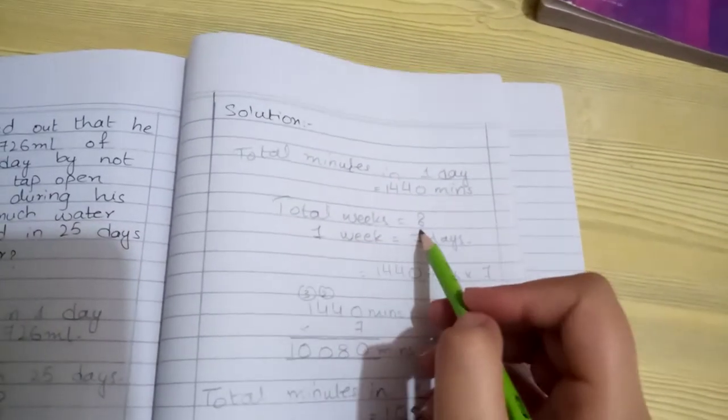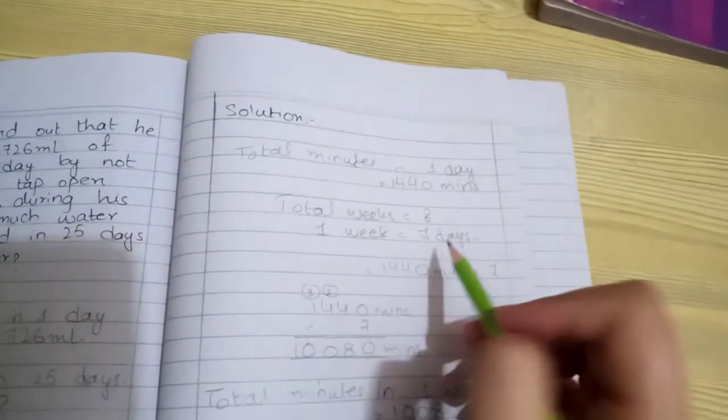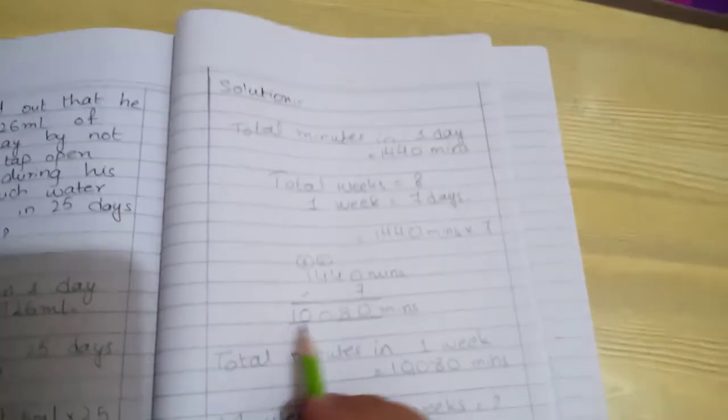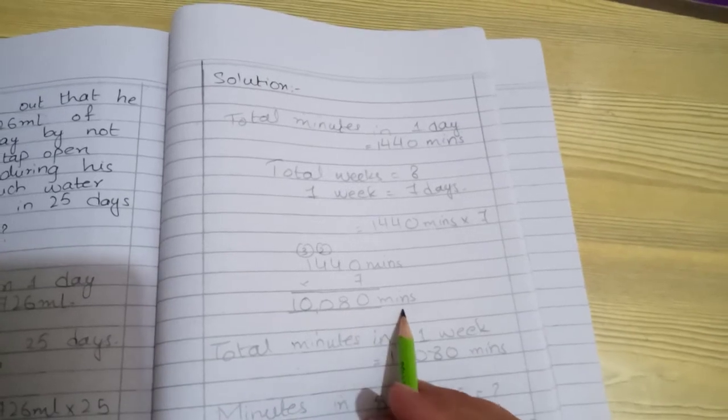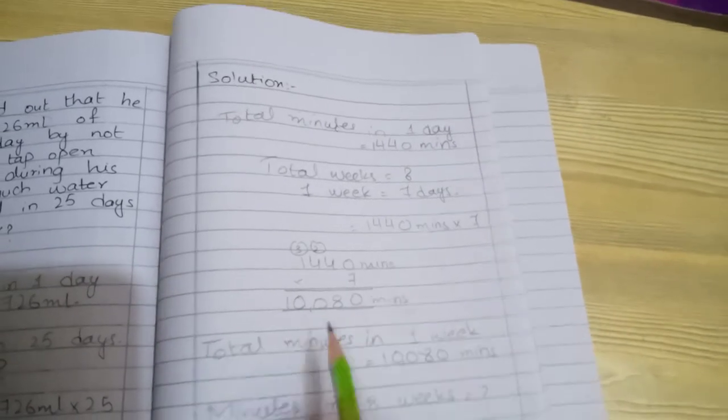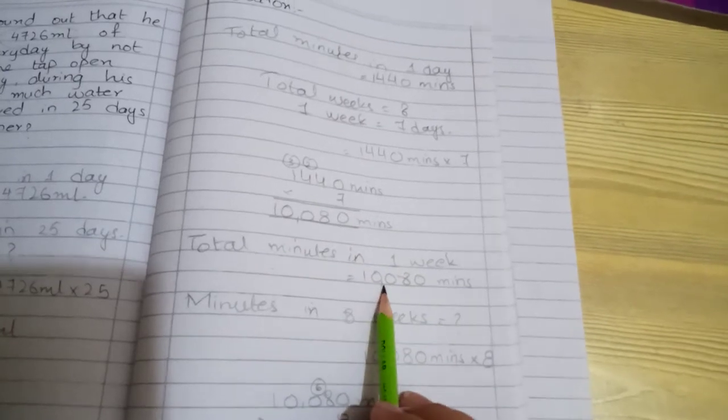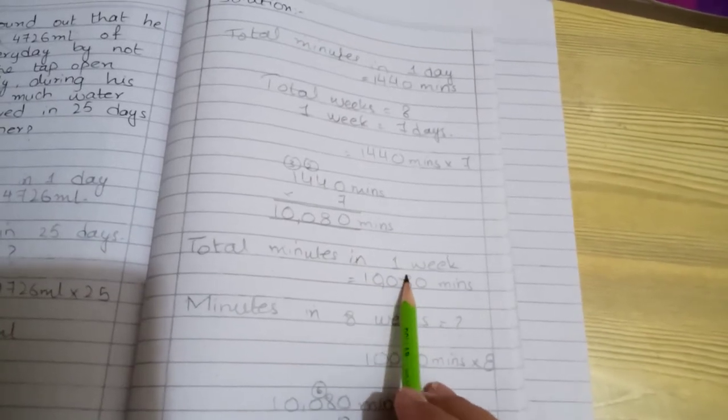Total weeks: eight. One week has seven days, so we multiply 1,440 by 7, which gives us 10,080 minutes for one week. Total minutes in one week equals 10,080.